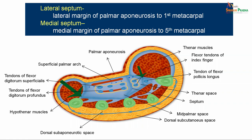As shown in the picture, the lateral septum goes from the lateral margin of the palmar aponeurosis towards the first metacarpal. The intermediate septum comes from the lateral border of the palmar aponeurosis going towards the third metacarpal. The medial septum starts from the medial border of the palmar aponeurosis and attaches to the fifth metacarpal. Thus, there are two main spaces: the thenar space between the lateral and intermediate septae, the mid-palmar space between the intermediate and medial septae, and the hypothenar space medial to the medial septum containing the hypothenar muscles.